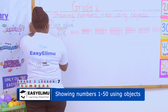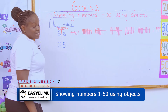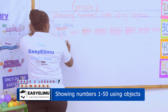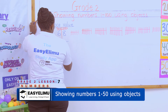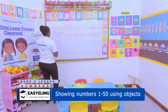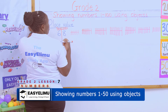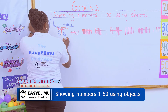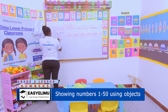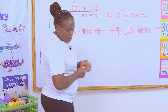Someone comes in and says represent this number using bundles of sticks again. What is the first rule, Janet? The first rule is: identify the position — the place value of those numbers. How many tens do we have? How many ones do we have? We have five ones and eight tens.